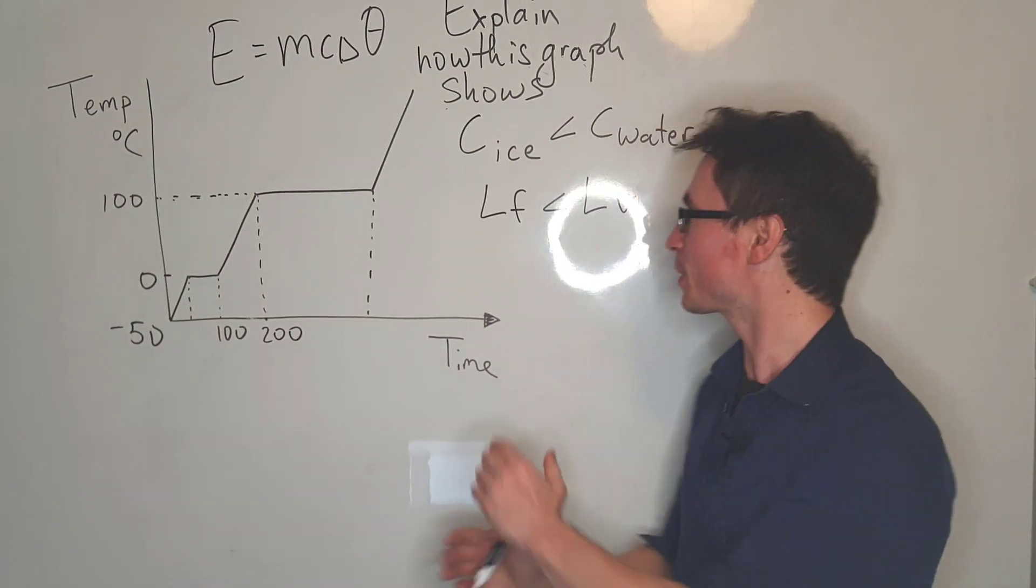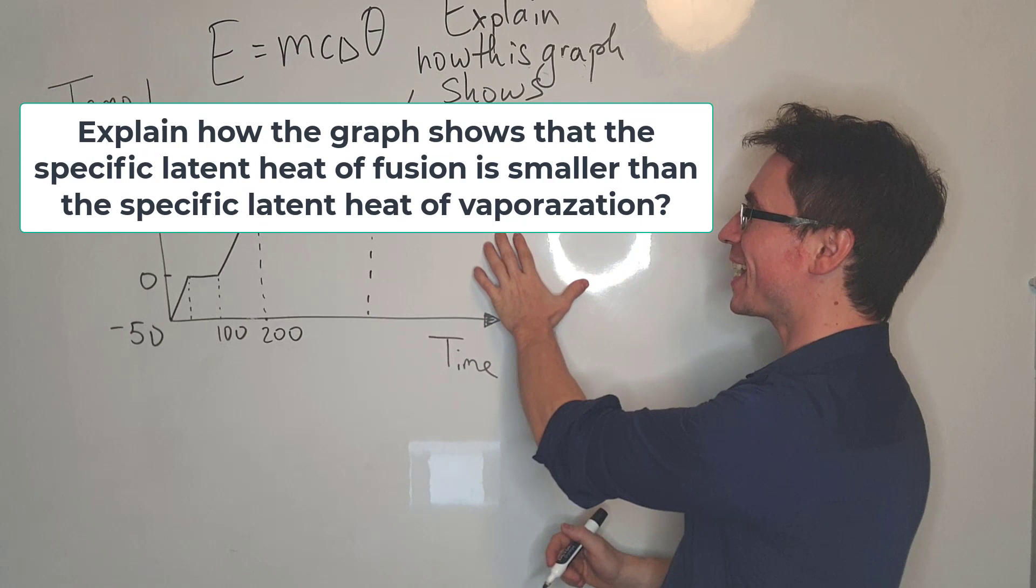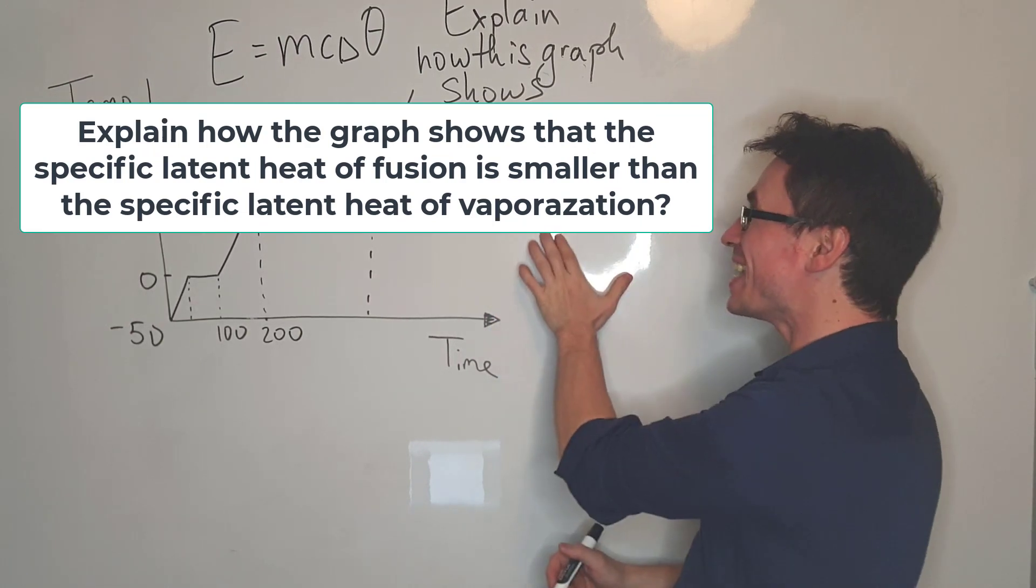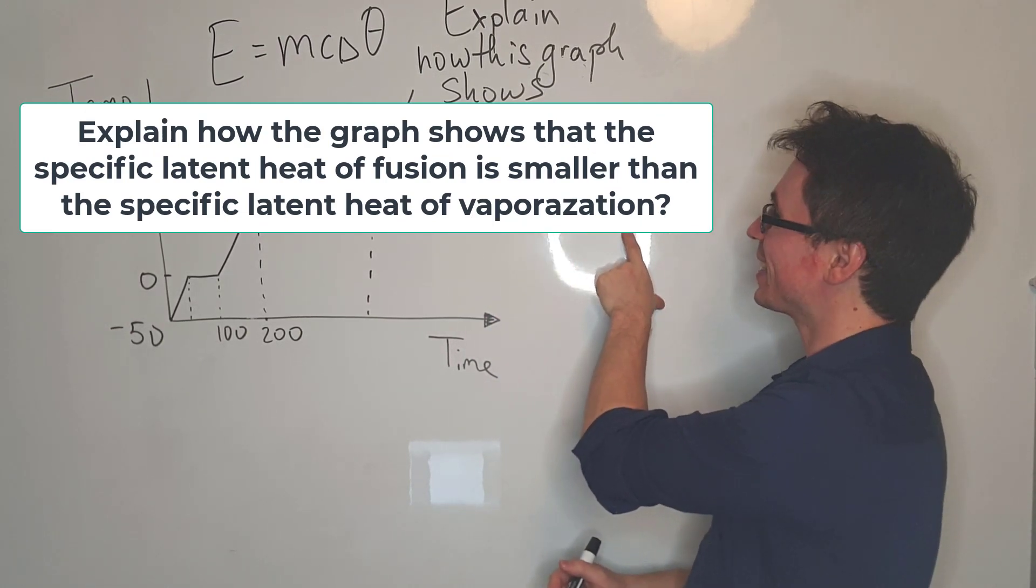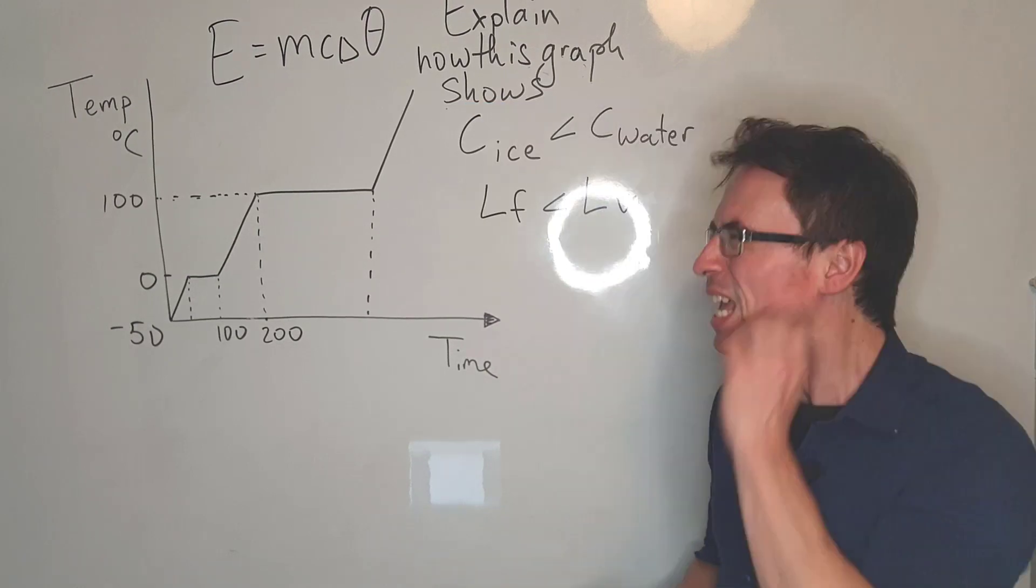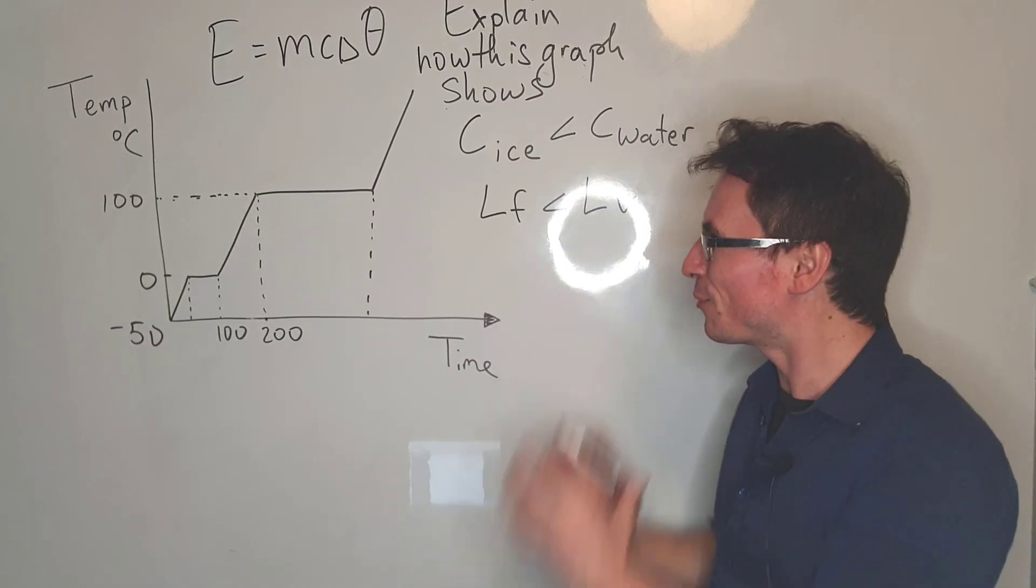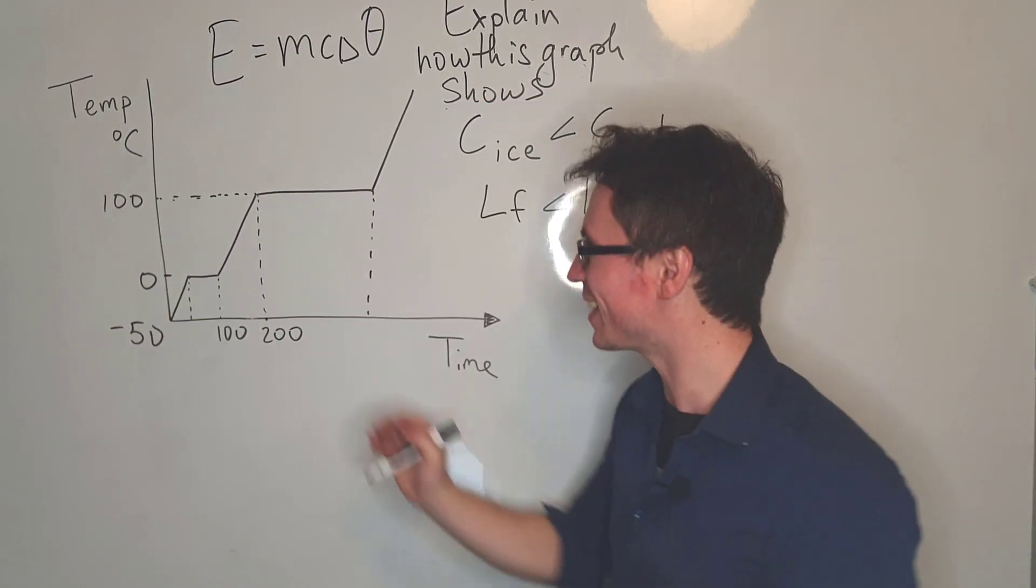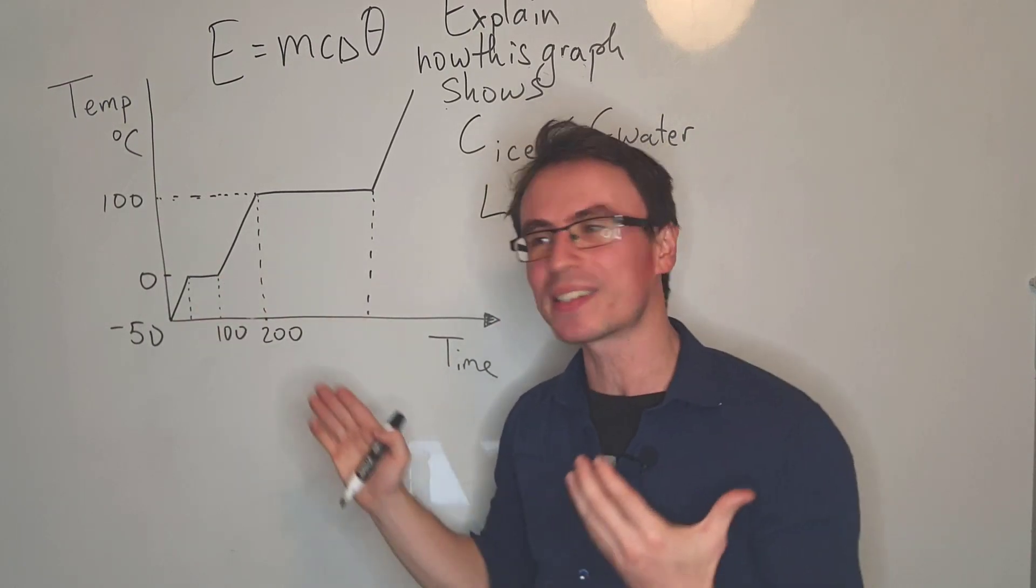The next part of the question is asking us to explain why is it that the specific latent heat of fusion is less than the specific latent heat of vaporization. So the specific latent heat of fusion is related to the region where the ice melts, which is just here.